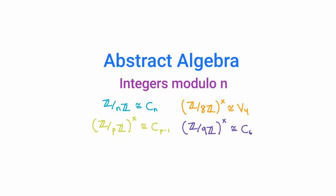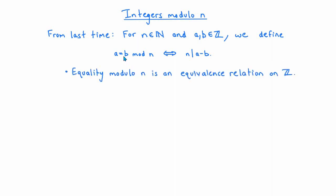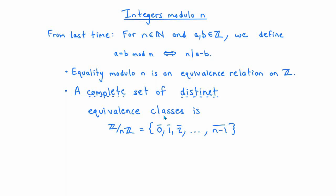In this video I'm going to start talking about the additive and multiplicative groups of integers modulo n. Remember from the previous video that for each natural number n we defined a relation on the set of integers by the rule that a equals b modulo n if and only if a minus b is divisible by n. Equality modulo n is an equivalence relation on the integers, and a complete set of distinct equivalence classes — also called the residue classes modulo n — is the set consisting of the equivalence classes of the integers from zero up to n minus one. Every integer is in one of these equivalence classes, and every pair of equivalence classes in this list is distinct and therefore disjoint. Our notation for this collection of equivalence classes is Z/nZ.